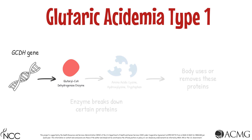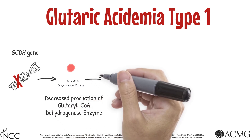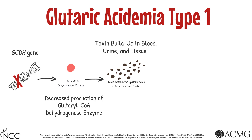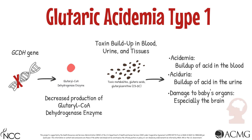The decreased production of this enzyme that occurs in Glutaric Acidemia Type 1 can cause the metabolites glutaric acid and glutarylcarnitine to build up to toxic levels in the blood, urine, and tissues. This buildup causes acidemia — a buildup of acid in the blood — aciduria — a buildup of acid in the urine — and damage to the baby's organs, particularly the brain.